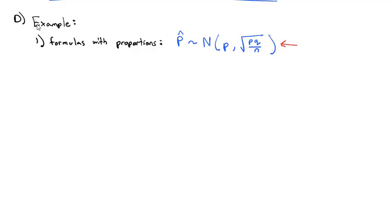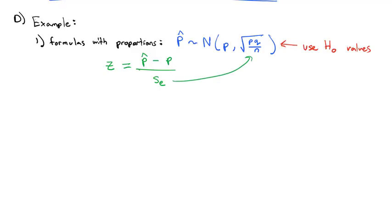Different from a confidence interval — which focused on the sample and used p and q from the sample — here we're focusing on a null and alternate hypothesis, so we're going to use the null hypothesis values. Then to calculate our p-value, z equals p-hat, the sample proportion, minus p, the hypothesized proportion, divided by the standard error. The standard error is the square root of pq over n.